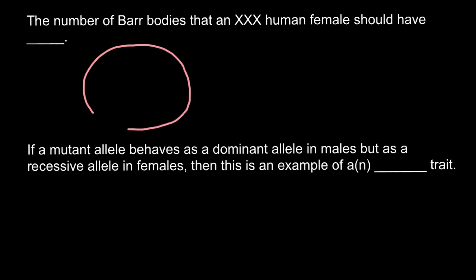Imagine that this is a nucleus, and here is one X chromosome, here is another X chromosome, and here is a third X chromosome. I do not show all the rest of the chromosomes. So how many Barr bodies would we have here? Two out of three would form a Barr body, and only one active X chromosome should be in the nucleus.